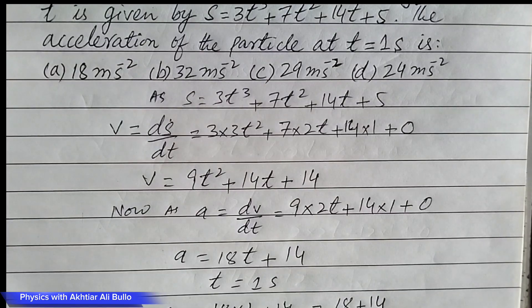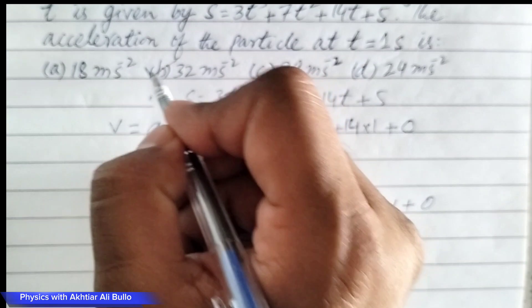So, the correct option will be 32 meter per second square.